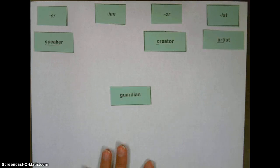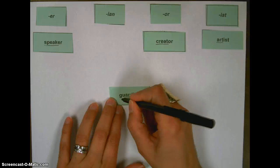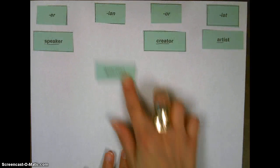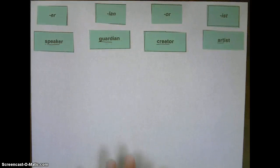And then the last one we have is guardian. Our base word for guardian would be guard. So adding that ian changes the word from guard to someone who is guarding. A guardian is someone who guards something.